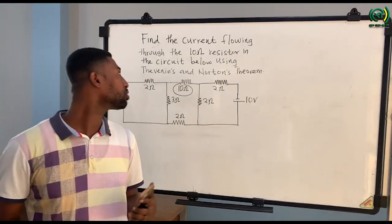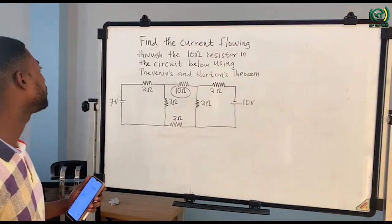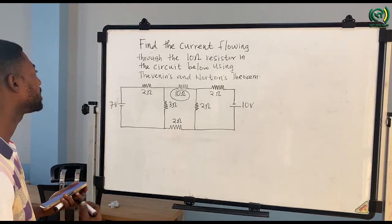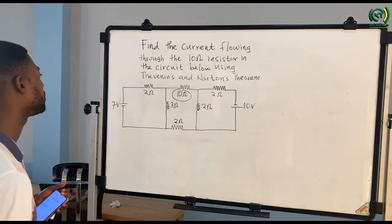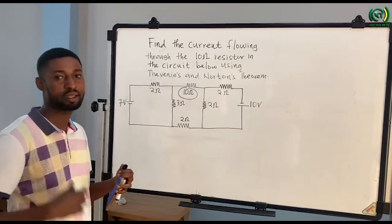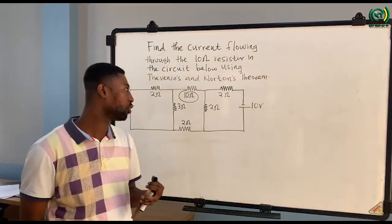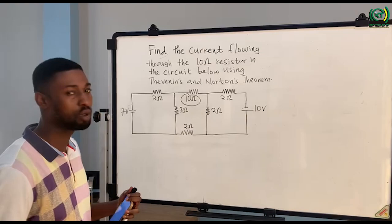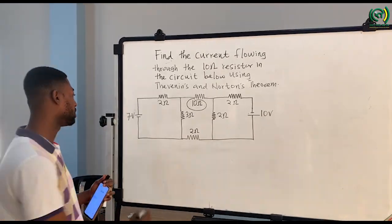We are supposed to find the current flowing through the 10 ohm resistor in the circuit using Thevenin's and Norton's Theorem. So this is the 10 ohm resistor — we need to find the current flowing through it using both theorems. Let's begin with Thevenin's Theorem.